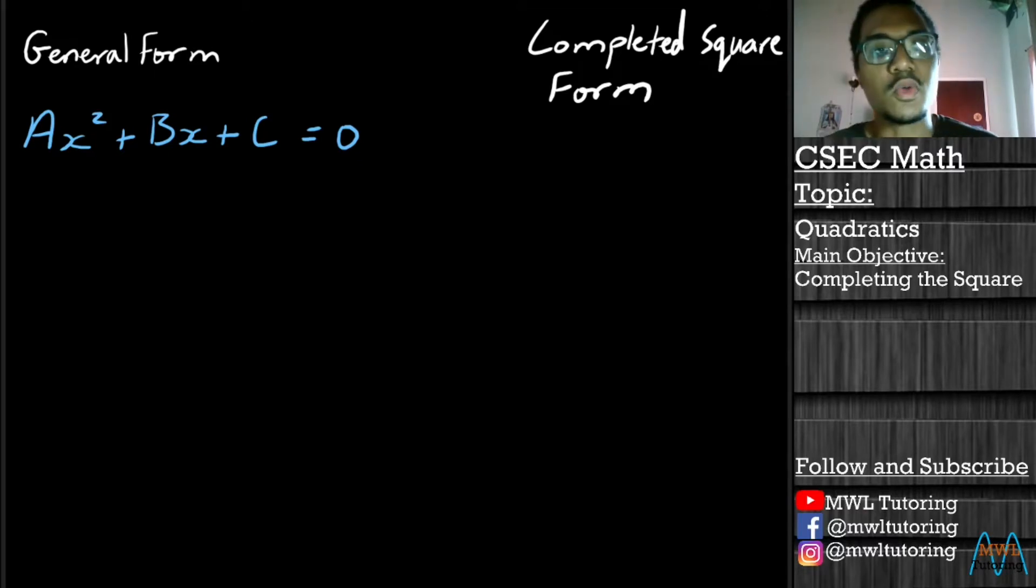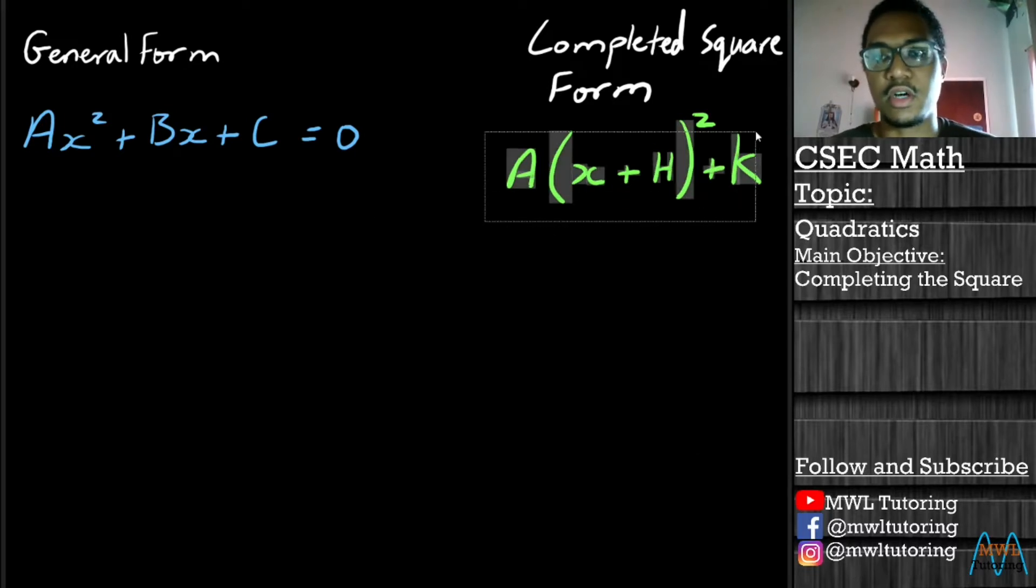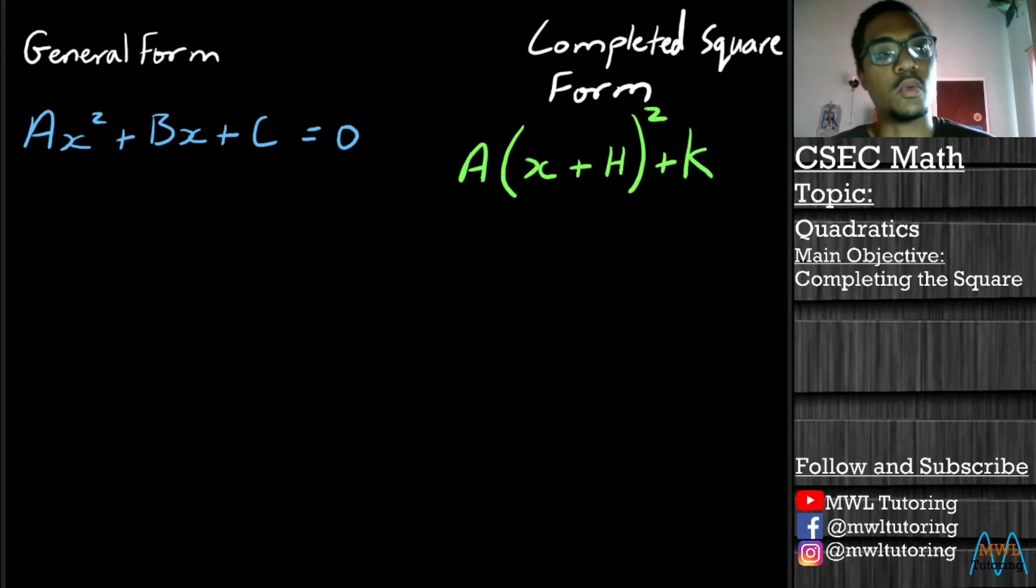And what completing the square is, it's all about converting from this general form to what we call the completed square form. And the completed square form looks something like this: A(x + h)² + k = 0. So the whole idea of completing the square is about moving from the general form to the completed square form.